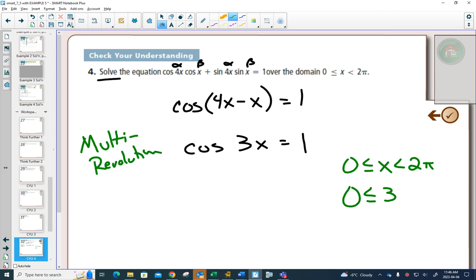So, the domain for 3x, if we multiply everything by 3, is between 0 and 6 pi. And 0 and 6 pi is 3 times around your unit circle, which is why we called it a multi-revolution question.